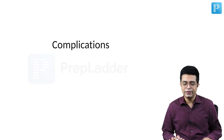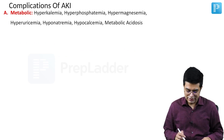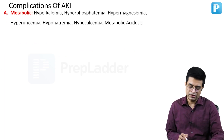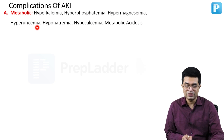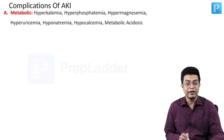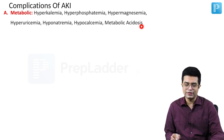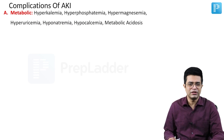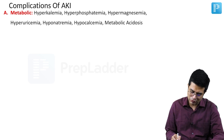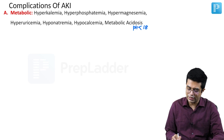Now coming to the complications of AKI. First of all, the complications can be in the form of metabolic complications. The common complication is hyperkalemia, hyperphosphatemia, and sometimes hypermagnesemia. There will be raised uric acid levels producing hyperuricemia, and there will be hyponatremia which is mainly dilutional, hypocalcemia, and metabolic acidosis. Mild metabolic acidosis can be there in AKI without any problems, but any metabolic acidosis where the pH of the blood falls less than 7.18 in arterial blood gas analysis is to be considered significant.